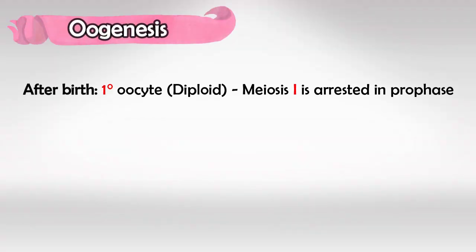Right after birth, the primary oocyte is going to have full chromosomes, so it's a diploid, and it's going to arrest in prophase of meiosis I.